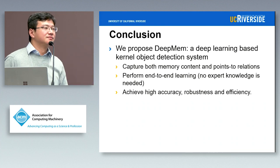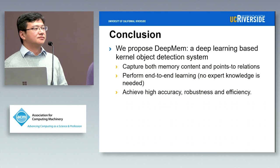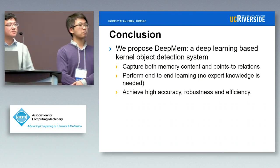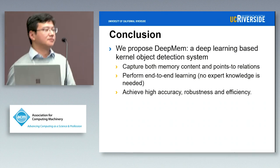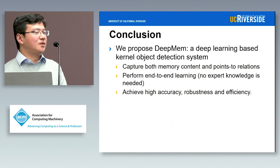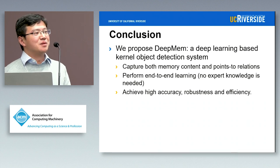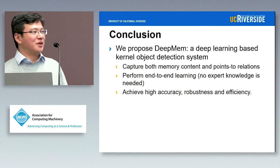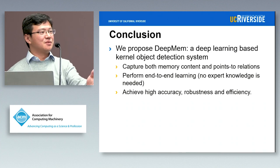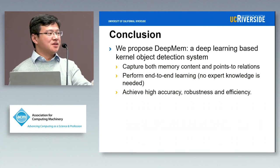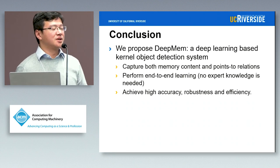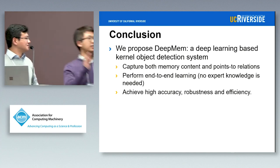Q: VMware or VirtualBox can have memory footprints that reveal you're in a VM. Did you try on bare metal — even once or twice — to see if the model generalizes? A: We didn't try bare metal, but fundamentally I don't see a difference between bare metal and a virtual machine memory dump. In this case we don't actually have any malware running in the system, so whether malware detects the virtual machine doesn't matter in our scenario.